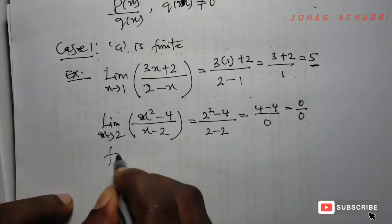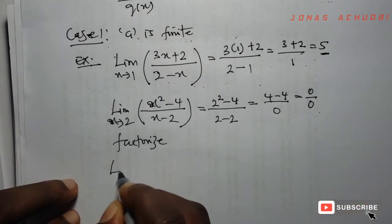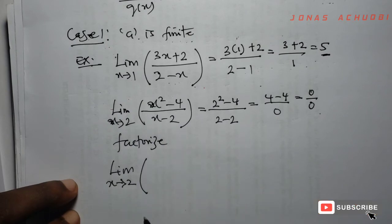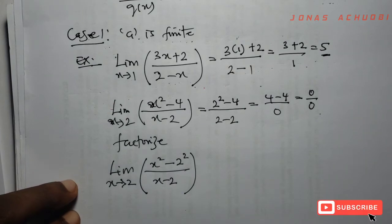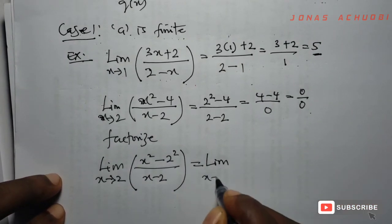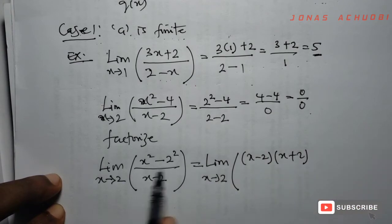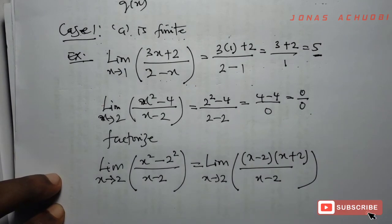What we do in this case is factorize. We write the limit as x tends to 2 of (x² − 4)/(x − 2). The numerator can be written as a difference of two squares: x² − 2² = (x − 2)(x + 2). So we have (x − 2)(x + 2) divided by (x − 2), and these two (x − 2) terms cancel.